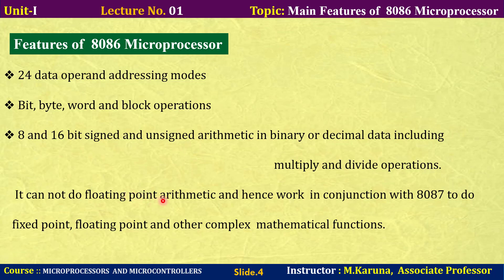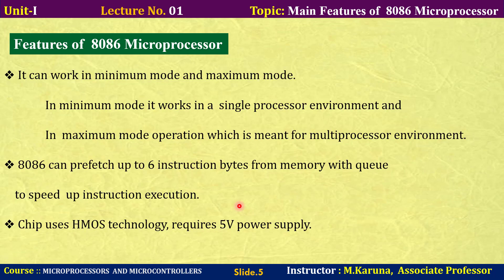The 8086 microprocessor can be operated in two modes: minimum mode and maximum mode. In minimum mode, it is used as a single processor. In maximum mode, it is used as a multi-processor configuration.